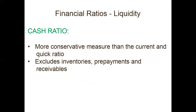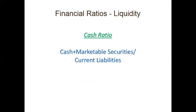Next is the cash ratio, which is very conservative compared to the current and quick ratios because you also exclude inventories, prepayments, and receivables. The cash ratio measures the firm's ability using only its most liquid assets — cash and marketable securities. Marketable securities are short-term trading or available-for-sale securities that can be converted easily because they are traded regularly in a specific market. The denominator is current liabilities.